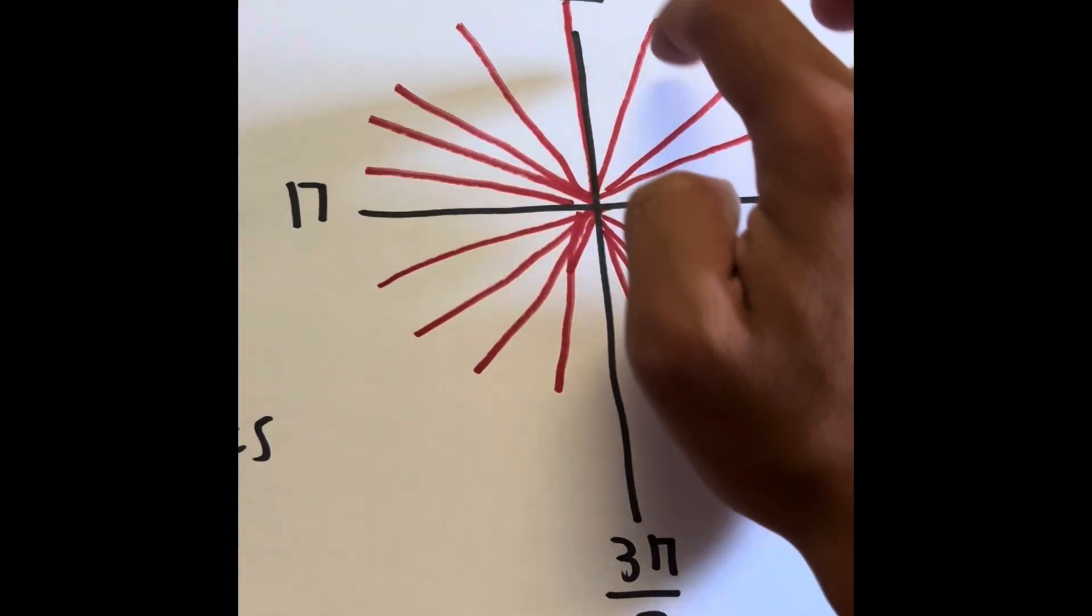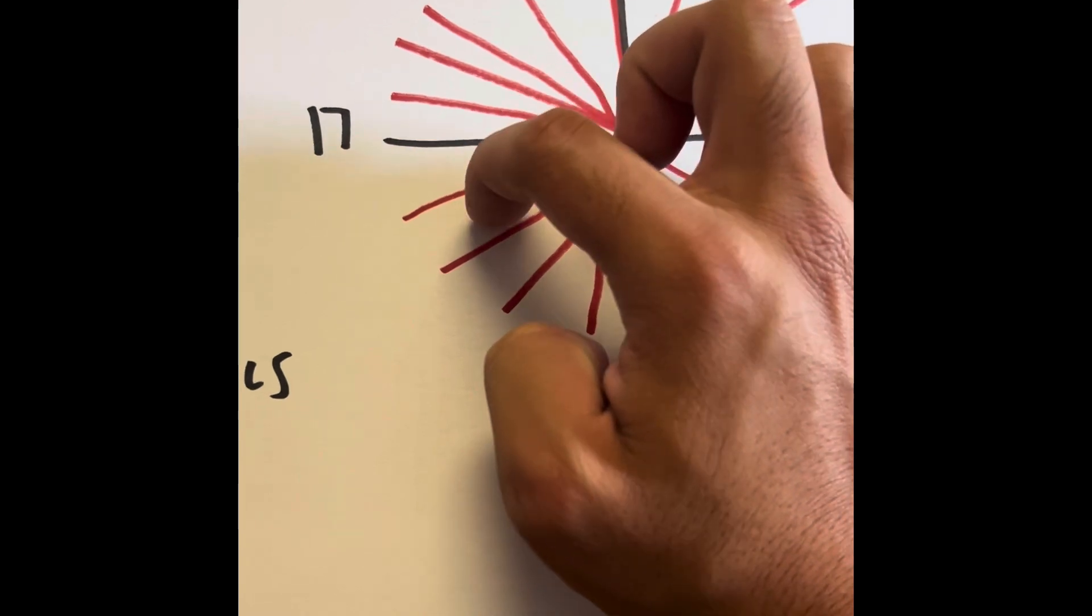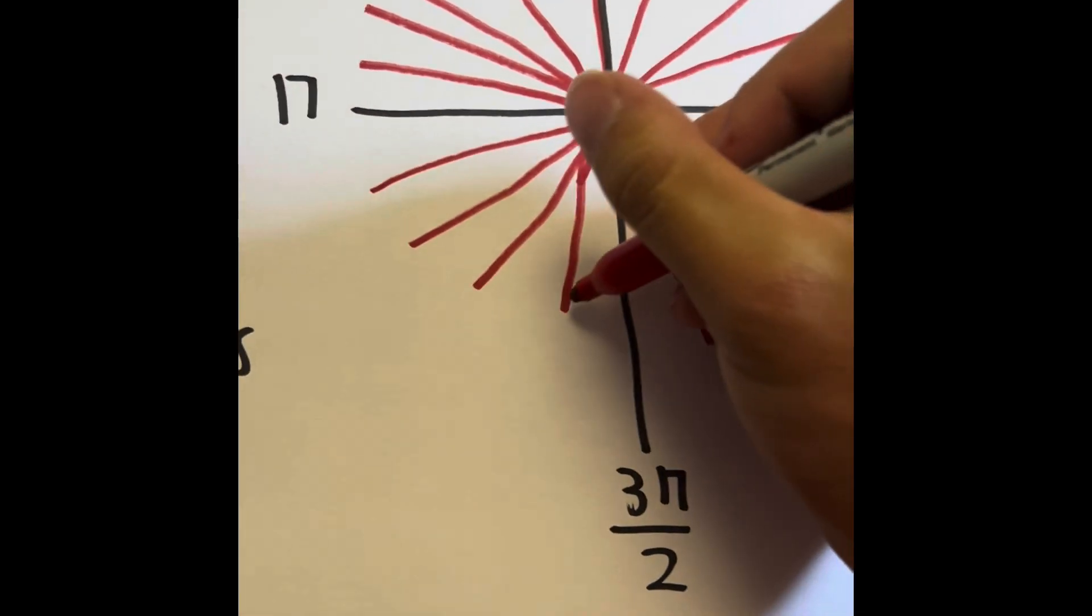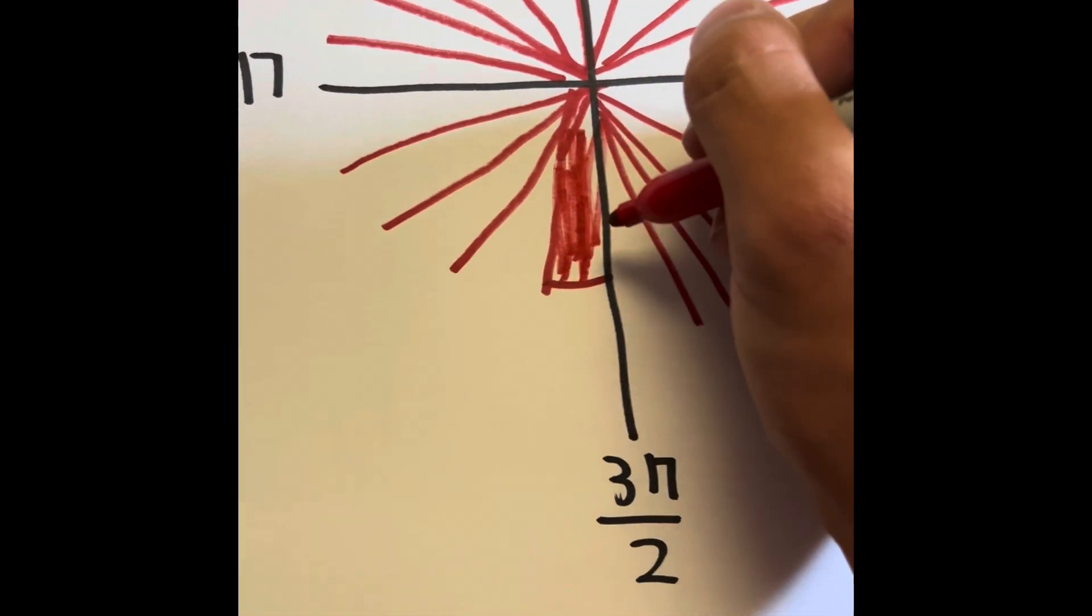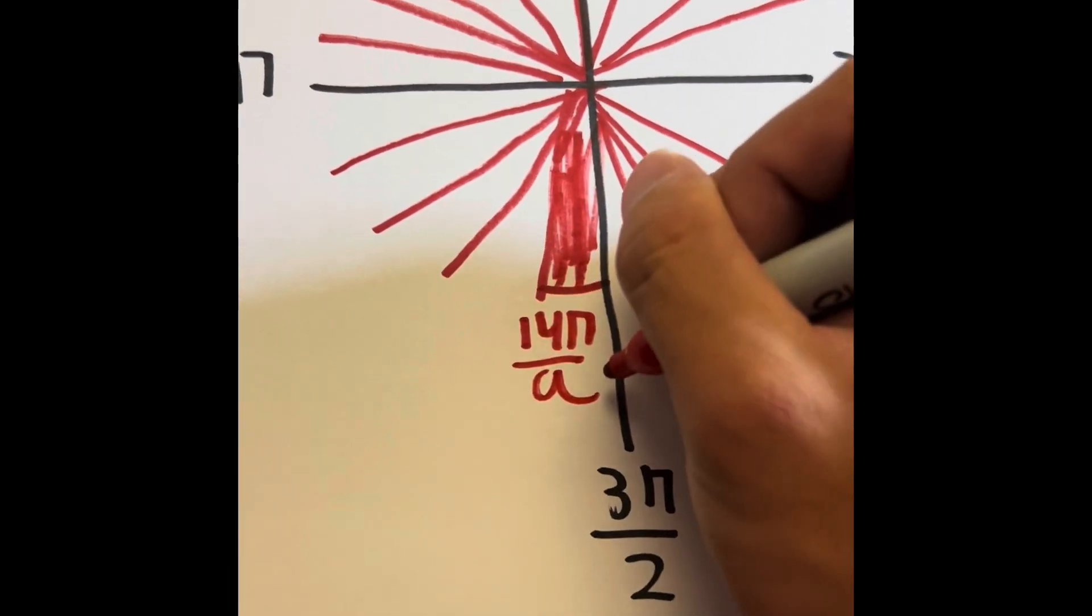So 1, 2, 3, 4, 5, 6, 7, 8, 9, half, 10, 11, 12, 13, 14. So right here is going to be, I'll just color it in so you can visually see what's happening. It's going to be 14π divided by 9. Whoa! That is very, very complicated to draw.